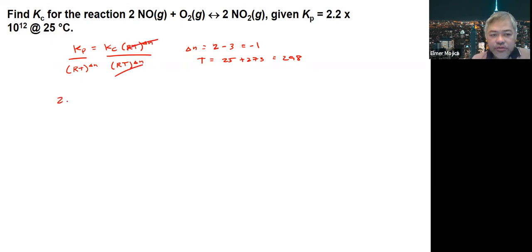So you have 2.2 × 10^12 divided by 0.0821 × 298 and raised to the -1. If you're going to solve the problem here to get Kc, you will get 5.4 × 10^13.